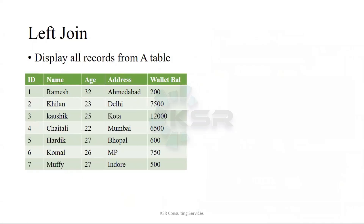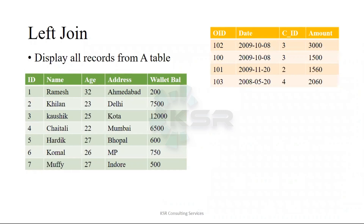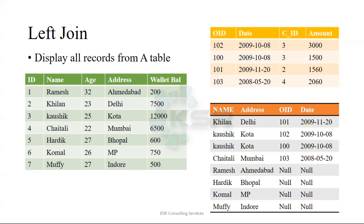Now left join — don't worry about the definition again. There is a green table and there is a yellow table, the same two tables. If I apply the left join, what will happen is all the records from the left table will come — that is the green table. I will call it the left table or table A. All the records from table A will come, and those purchase informations I will be getting from the B table as well. For the rest of the people, I will not get any information.